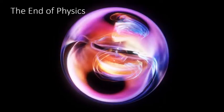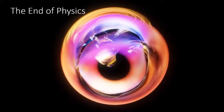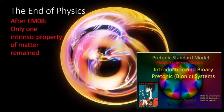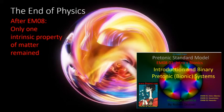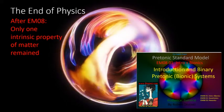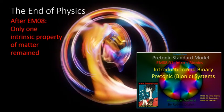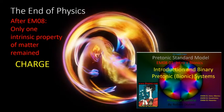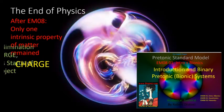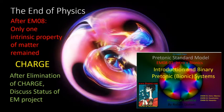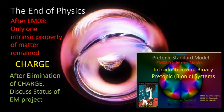Welcome to the end of physics. What I mean by that is that we can see the light at the end of the tunnel, because if you recall from the release of the pre-tonic standard model, all of the intrinsic properties of matter that were talked about in quantum mechanics were eliminated as properties synthesizable by a more primordial system. There was only one intrinsic property that remained, and that was charge — more specifically, pre-tonic charge, not Coulomb charge. In this video, we're going to eliminate pre-tonic charge. And after we do that, we're going to have a brief discussion of the status of the ethereal mechanics project.